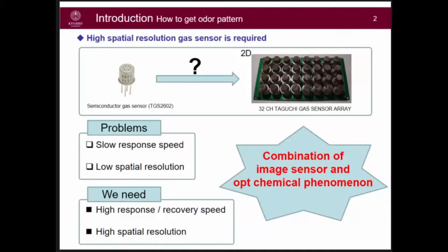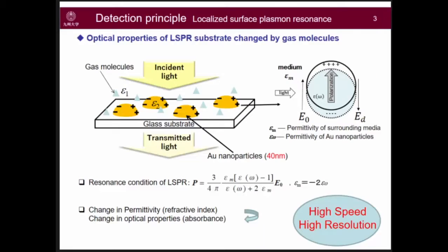In this research, we use an image sensor like a CCD camera for high spatial resolution, and optical chemical phenomena for high response speed. We need a combination of these two. The detecting principle is LSPR — Localized Surface Plasmon Resonance. The most important point is that the optical properties of this LSPR substrate will be changed by gas molecules.